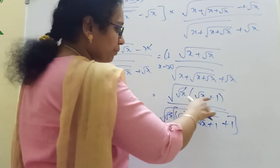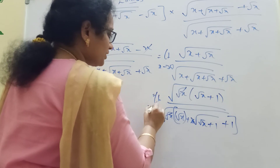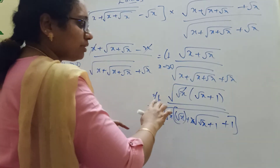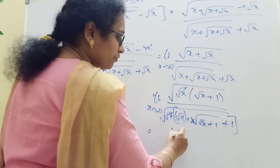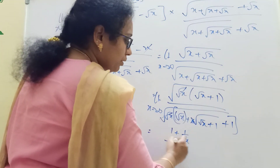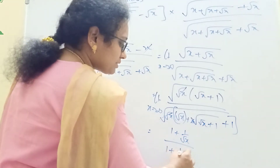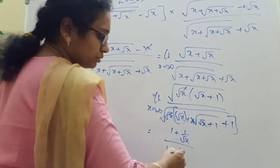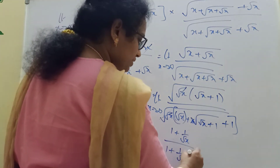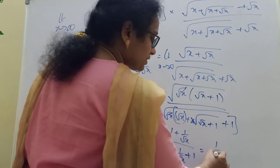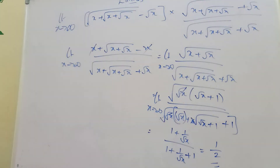We can use 1 by root x like that. If you want to add value, you can apply the value. Now root x is just 1 plus 1 by root x. That means 1 plus 1 by root x — that means this is 0. Now we have 1 by root x. Value of 1 by 1 plus 1 is 2. What is the value? 1 by 1 plus 1 is 2, so the answer is 1 by 2.